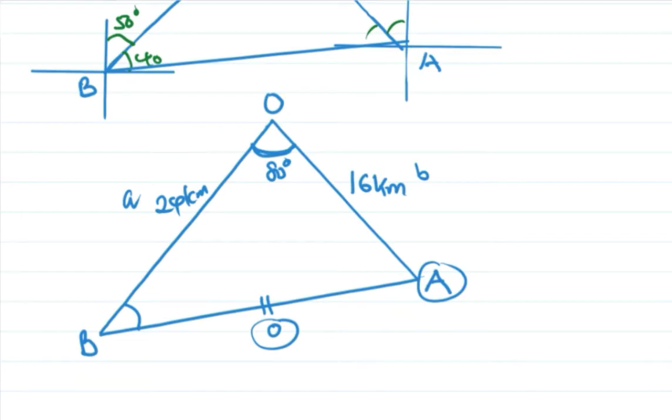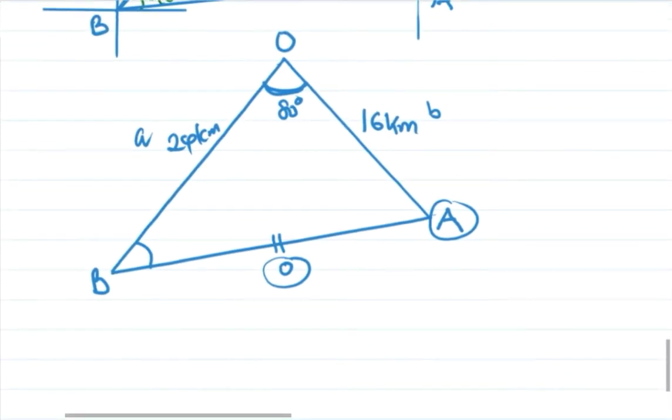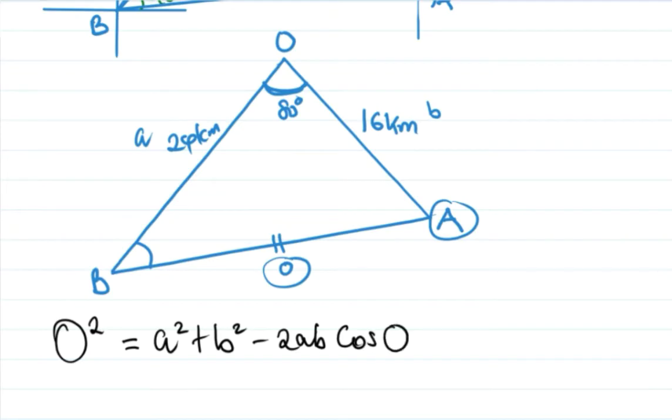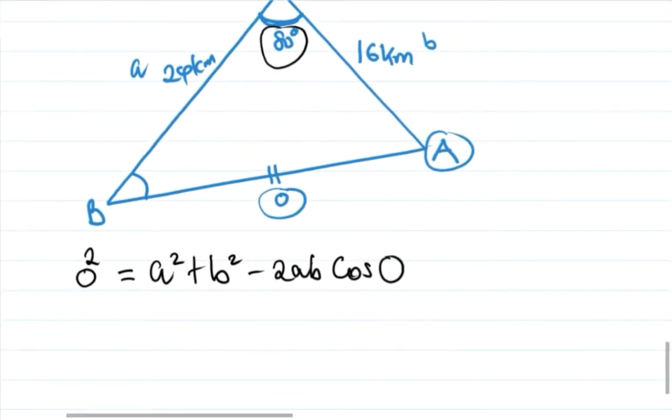To find this distance which we've labeled as O, we're gonna use the cosine law. So O square is A square plus B square, then minus 2AB cos(angle).